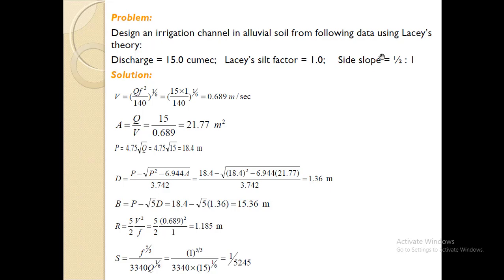The first step is to calculate the velocity using Lacey's velocity formula. We are given the discharge Q, and the Lacey silt factor f equals 1. Putting in the values, we calculate the velocity as 0.689 meters per second. We then calculate the area from the formula: since Q divided by velocity gives area, the area is 21.77 square meters. The wetted perimeter is then calculated from Lacey's formula.